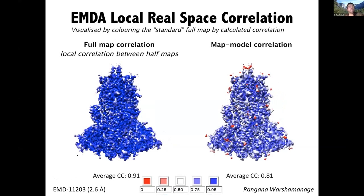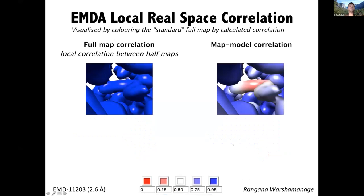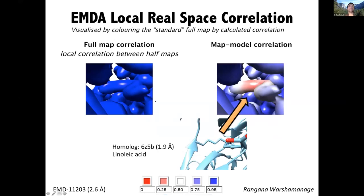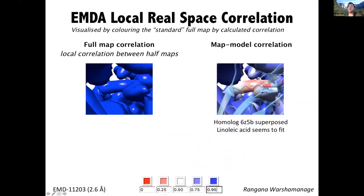Here's another case where we have a good full map correlation between the half maps, but lots of red on the surface indicating poor map-to-model correlation in small regions. Focusing on one such region, something has not been built there, yet there is a good local correlation between the half maps. Considering a homologue, there is actually a linoleic acid built in that region, and if we superpose it, the linoleic acid appears to fit.